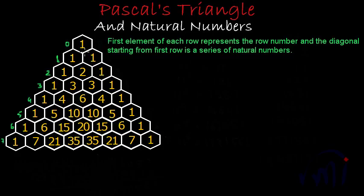The beginning element of each row is called element number 0 and the next element is called the first element. If we talk about row number 0, it has only one element, which is element number 0 of row number 0. We don't have any first element in row number 0, and that is why we don't have any natural number over there.